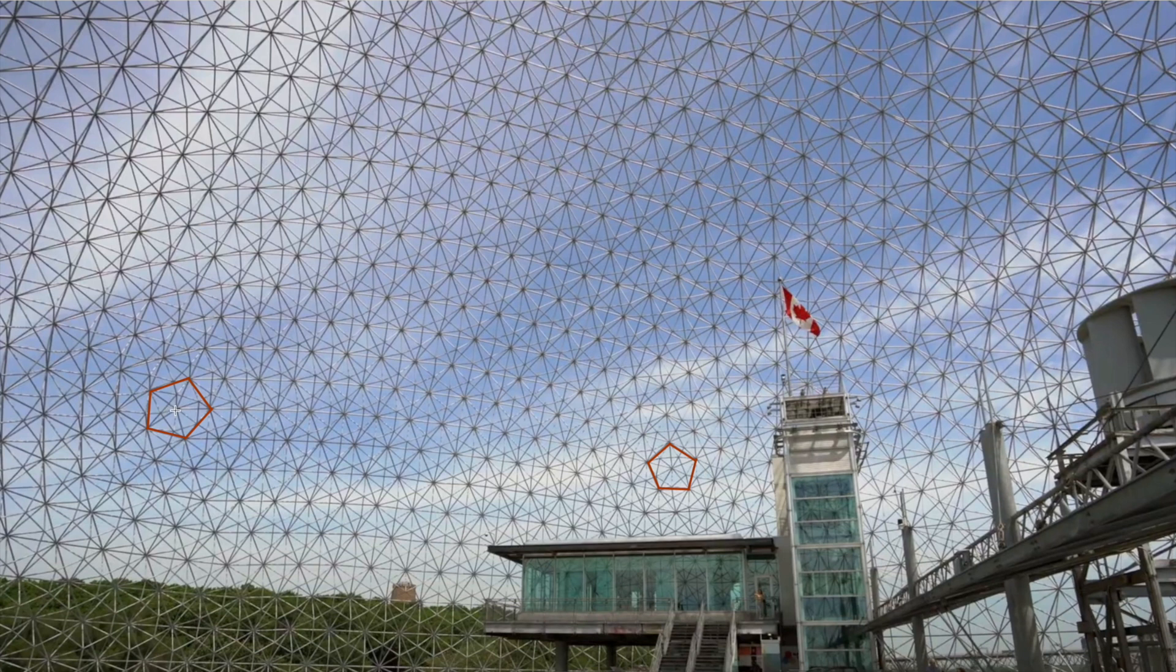And if you count these struts: one, two, three, four, five, six, seven, eight, nine, ten, eleven, twelve, thirteen, fourteen, fifteen, sixteen. You count the struts from the center of one pentagon to the center of the other and that gives you the frequency. So the Montreal Biosphere is a 16 frequency icosahedron based dome.